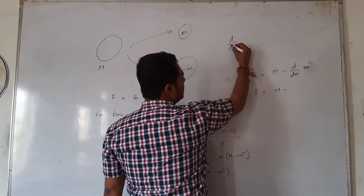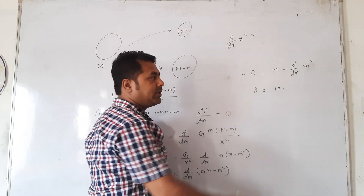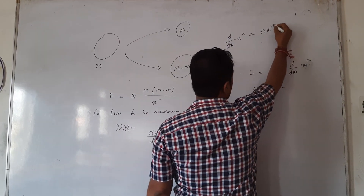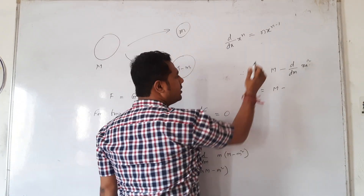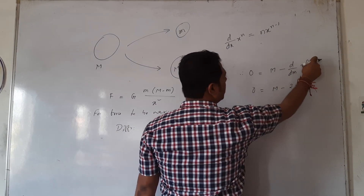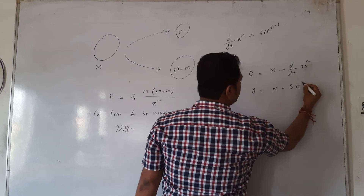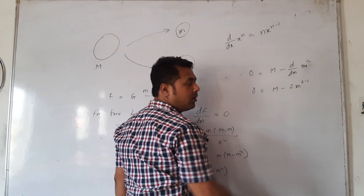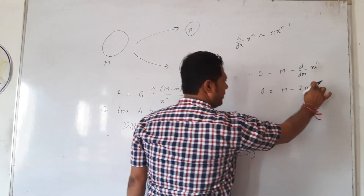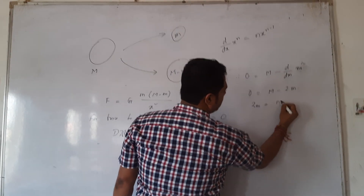We apply the differential formula: d/dx of x to the power N equals N times x to the power N minus 1. So d/dm of m squared equals 2 times m to the power 2 minus 1, which simplifies to 2m. Therefore, 0 equals M minus 2m, which gives 2m equals M.